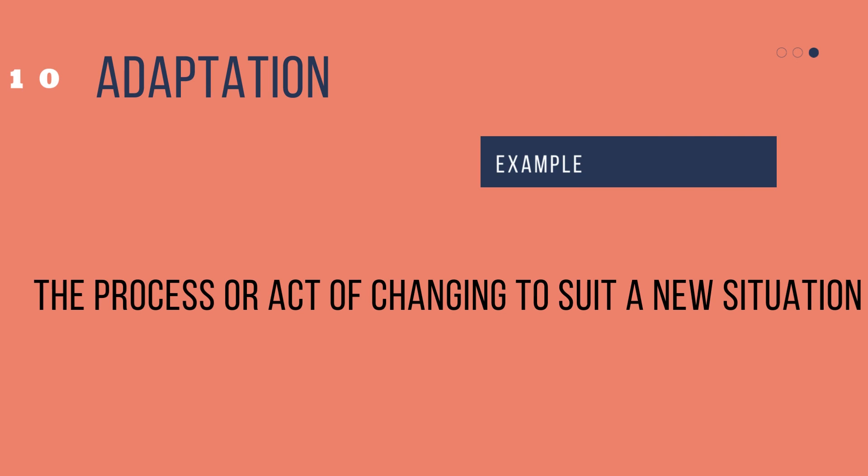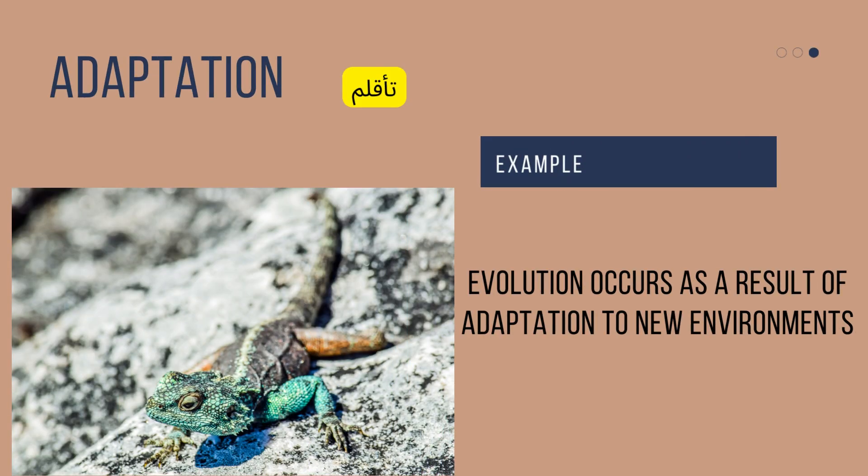Number ten: adaptation — the verb is to adapt. It is the process or act of changing to suit a new situation. When the situation changes, people or animals have to change as well. Example: this is the chameleon — it changes its color. Evolution occurs as a result of adaptation to new environments.